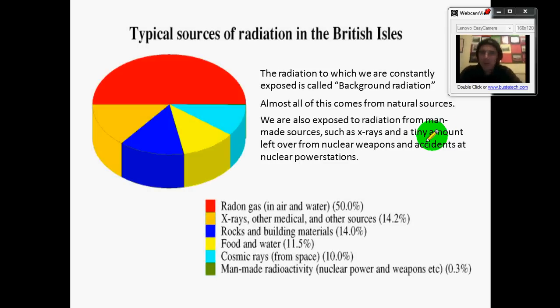Okay this pie chart tells us about typical sources of radiation in the British Isles. You can see that about half of it comes from radon gas. If you live somewhere like Devon or Cornwall or possibly up near Aberdeen where you've got a lot of granite in the rocks you'll get more. X-rays is the next biggest chunk and obviously if you're having a lot of dental work done or you've broken some bones you'll have more x-rays than other people. Rocks and building materials, if your house is made of granite you'll get a much higher dose than if it's not.